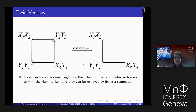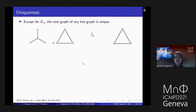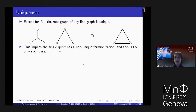Vertices with the same neighborhood have a product that commutes, so we can fix a symmetry to remove them. For the forbidden subgraphs, this allows us to remove the forbidden subgraph if those twins are wired into the graph in the same way globally. Except for the complete graph on three vertices, the root graph of any line graph is unique. Except for the claw graph K1,3 and K3, which both have the same line graph K3, all line graphs have a unique root. This implies the single qubit has a non-unique fermionization, but this is the only time this happens.